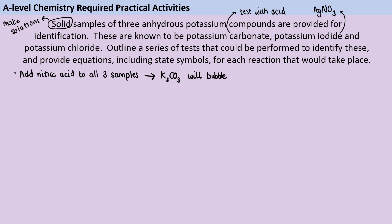And then, as it says in the question, we need to provide an equation for this, including the state symbols. So really often with this kind of question, people miss out the equation or they miss out the state symbols. So we've got our solid potassium carbonate reacting with nitric acid to make potassium nitrate, which is aqueous, and then also the carbon dioxide gas and the water, which of course is a liquid.